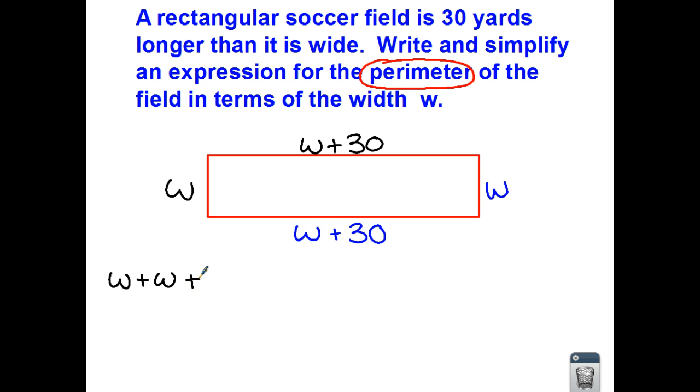Plus, because we're doing the perimeter, a length, which is w plus 30. And another length, the other side of your figure, which would be w plus 30.